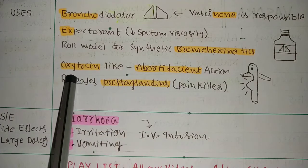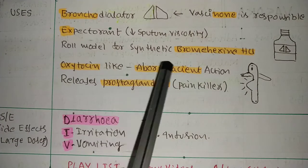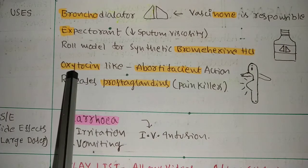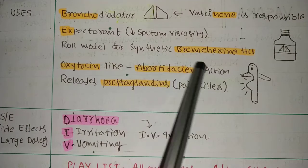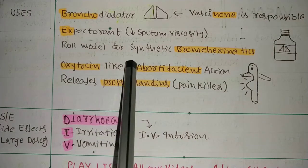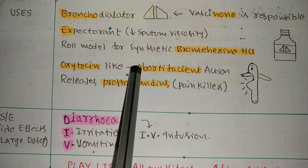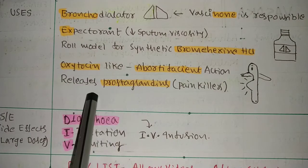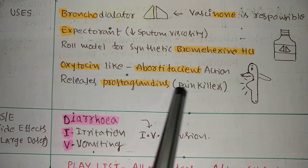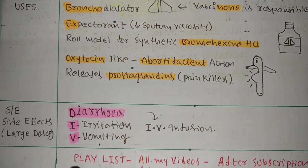It also has an action like oxytocin. Oxytocin is an injection given in pregnancy for delivery of the pregnancy and also used as abortifacient to remove the pregnancy, to deliver a baby, or if you want to terminate the pregnancy. It has the action of contraction of the uterus. This property is in Vasaka. And it releases prostaglandins - prostaglandins are painkillers. It releases prostaglandins also.